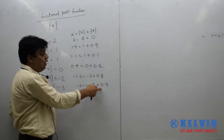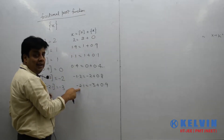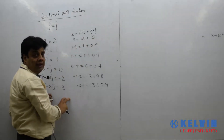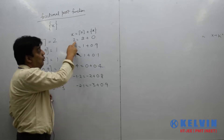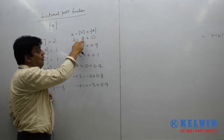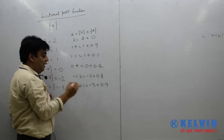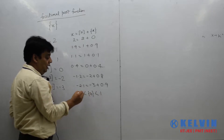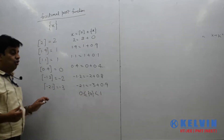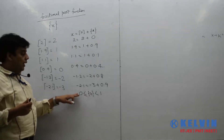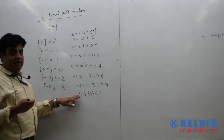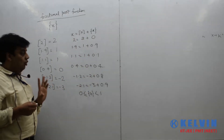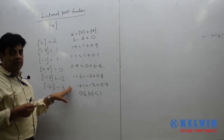So whether the number is positive or negative, the fractional part will always be positive. First point: fractional part is always positive. Second point: the fractional part value can be 0, but it can never be 1, because we cannot write 2 as 1 plus 1 — we must write the integer part correctly. So the range of the fractional part is 0 to 1: it can be 0, but cannot be 1.